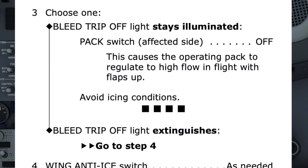Step 3 is conditional — did the bleed trip-off light stay illuminated or not? If it had stayed illuminated, the right pack would have been switched off and icing conditions avoided, completing the checklist. However, when we pushed the reset button, the light extinguished, so the checklist directs us to step 4.